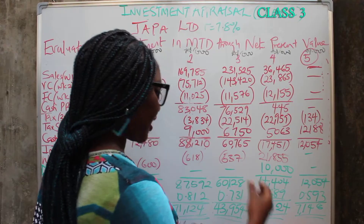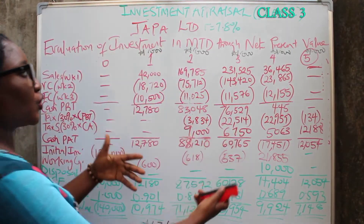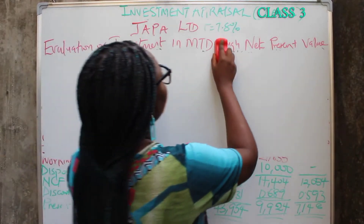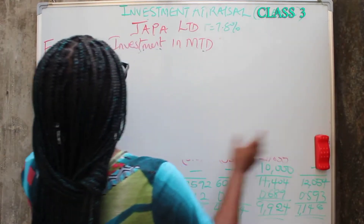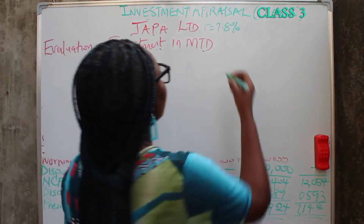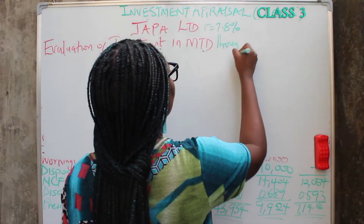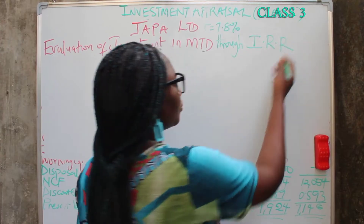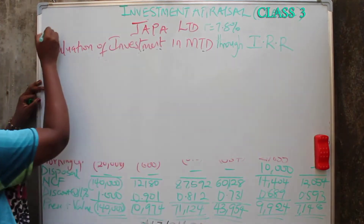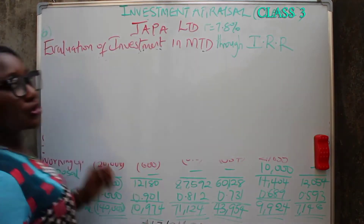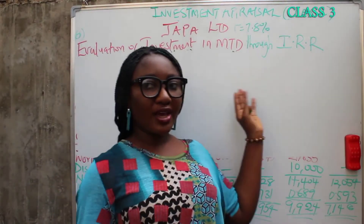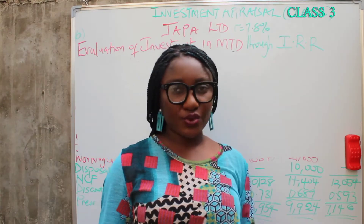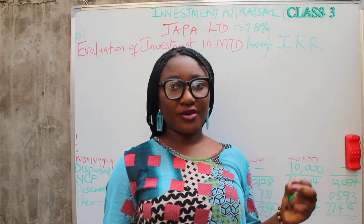So what is IRR? I'll explain what IRR is and we'll continue the question. We need to write evaluation of investment in MTD through IRR — write it in full as internal rate of return. So IRR is the rate at which your NPV will be zero.